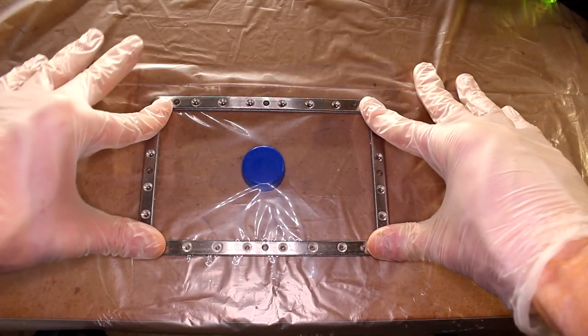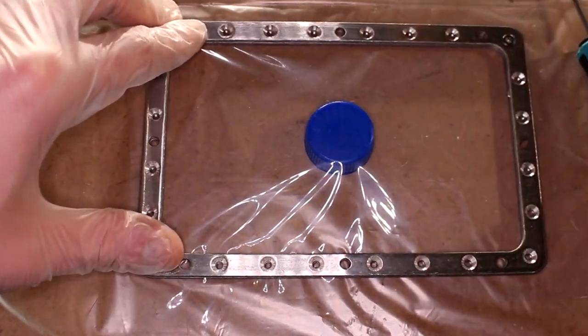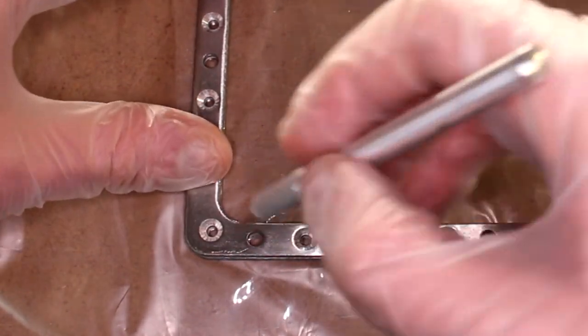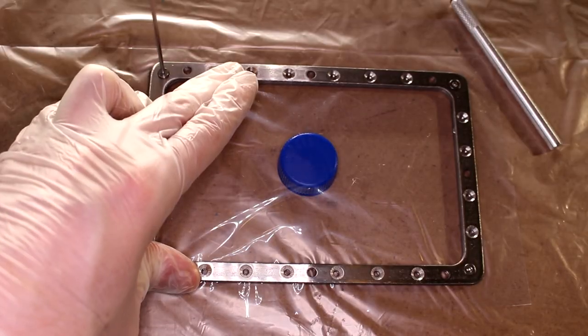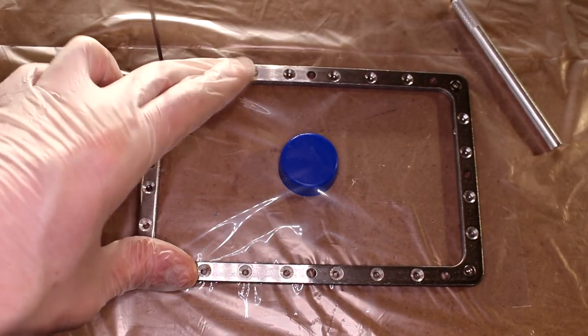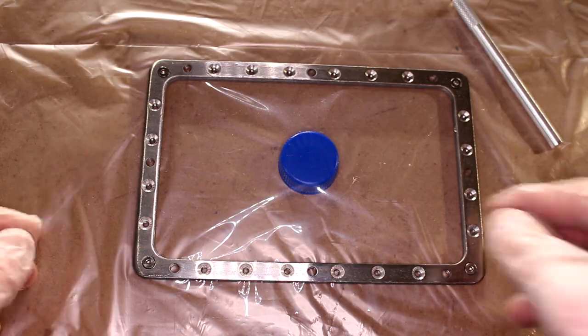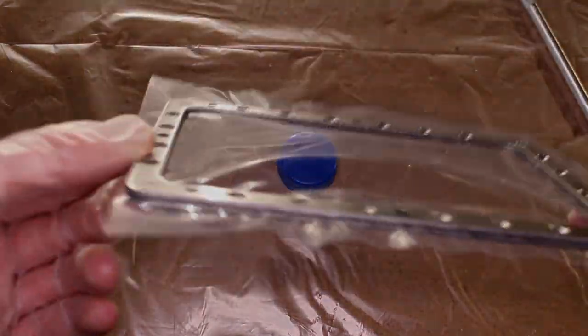Hold everything in place and begin the work of replacing all the screws again, but this time you'll need to poke a hole through the FEP. Getting the four corners first definitely helps, then follow up with the diagonal pattern, making sure everything is secure.